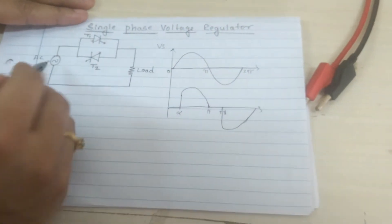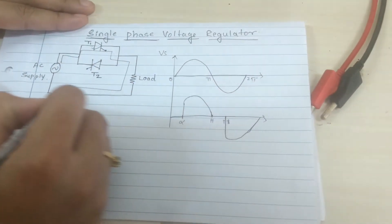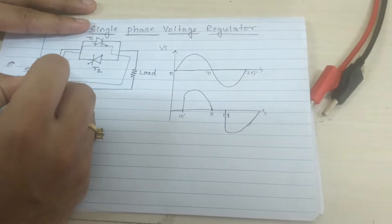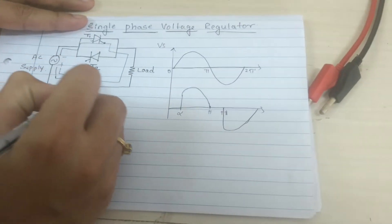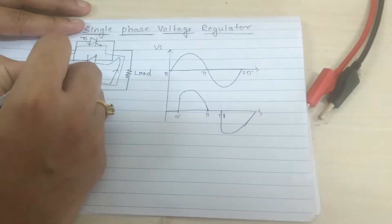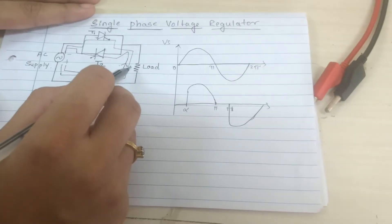During positive half cycle, the current flows through T1, through the load, and back to the supply. During negative half cycle, the current flows reverse through the load first, through T2, and back to the supply. The current direction supports it in both half cycles.